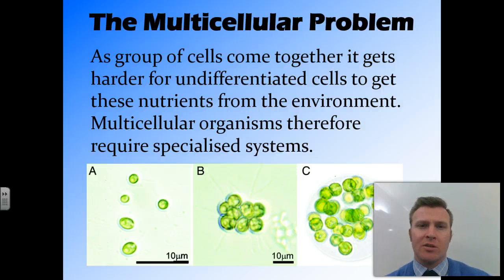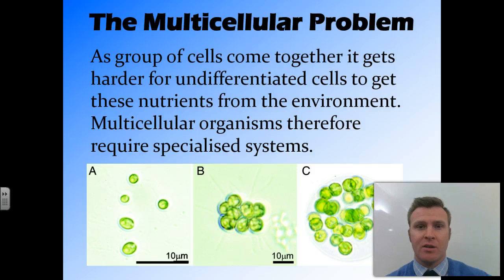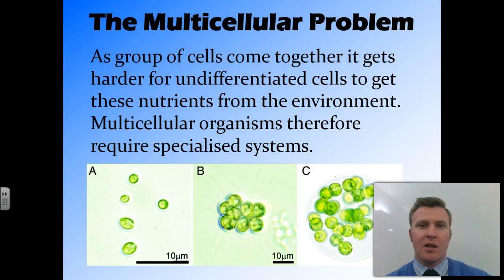So as we saw, cellular respiration requires glucose and oxygen. As cells come together into larger and larger groups, we get a problem, and that is that there's not enough surface area for that glucose and oxygen to diffuse across the cell membrane. This is called the multicellular problem. The more cells in an organism, the harder it is for all the cells to get the nutrients that they need.